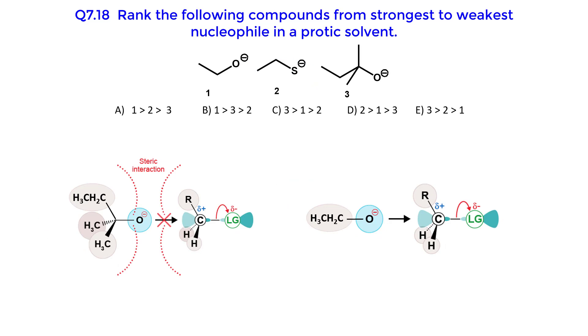Now look at the oxygen containing compounds. 2-methyl-butane-2-olate is a sterically hindered nucleophile. The nucleophilic oxygen is bonded to a tertiary carbon. It will have a difficult time reaching the electrophilic carbon due to steric interaction. The ethoxide anion is much less sterically hindered, making it a better nucleophile.